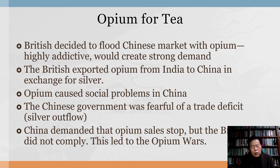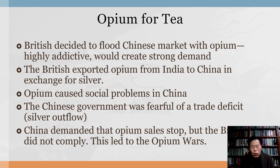Finally, the British East India Company decided to flood the Chinese market with opium. Opium is highly addictive, so it would create ever-increasing demand. The British exported opium from India to China in exchange for silver. But opium caused social problems in China, and the Chinese government was afraid of the resulting trade deficit and outflow of silver. China demanded the opium sales stop, but the British did not comply. This led to the Opium Wars.